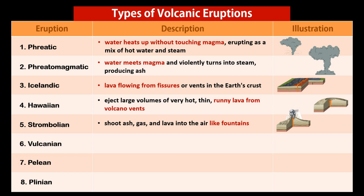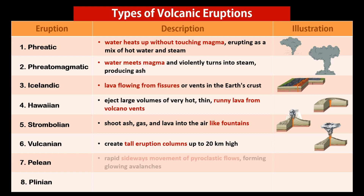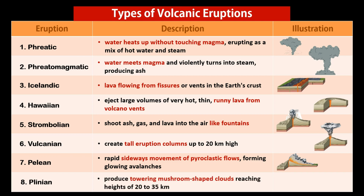Vulcanian eruptions create tall eruption columns up to 20 km high. Pelean eruptions involve rapid sideways movement of pyroclastic flows forming glowing avalanches, and produce towering mushroom-shaped clouds reaching heights of 20 to 35 km.